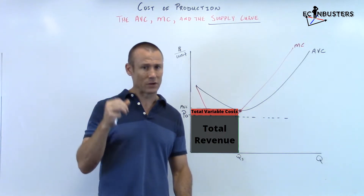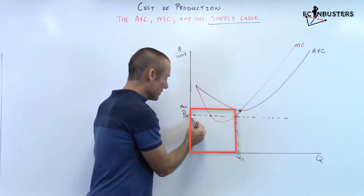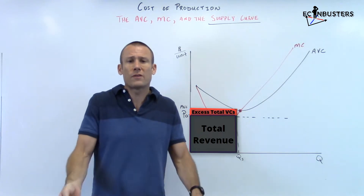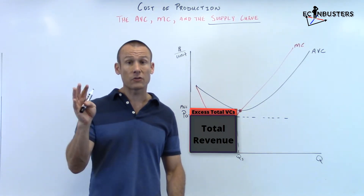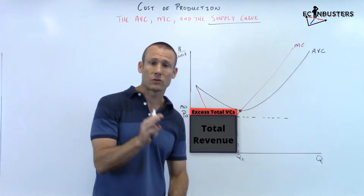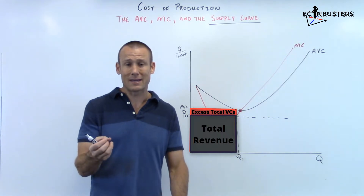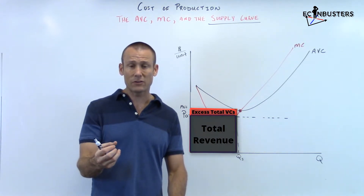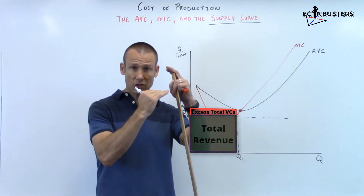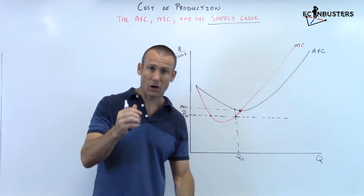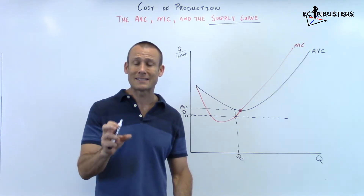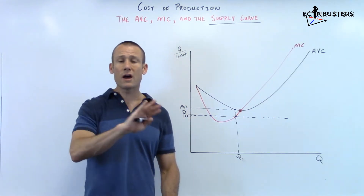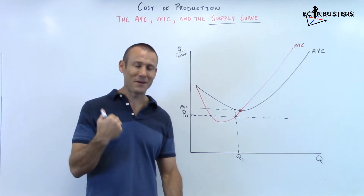Should you produce if your total revenue is less than your total variable cost? The answer is no — don't produce. If you shut down, your total revenues go to zero but your variable costs also go to zero. That's way better than having total variable costs greater than total revenue. If you keep producing in that situation, you're just digging a deeper hole — incurring not just your fixed cost but additional losses beyond that.